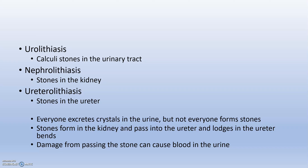Everyone excretes crystals in their urine, but not everyone forms stones. Stones form in the kidney and pass into the ureter, lodging at the ureter bends. As mentioned in the UTI and cystitis PowerPoint, kidneys can produce stones, and for some people they produce them large enough to get stuck. The ureters narrow at their bends, and that narrowing is where the stones get stuck.